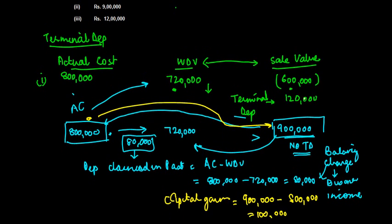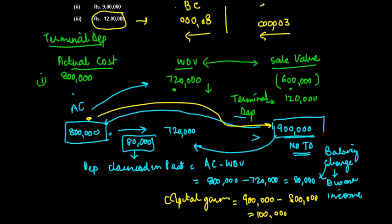Similarly, in the third case, when it is sold for 12 lakh, just find this out for yourself. I am writing the answers in reverse order—for balancing charge and capital gain, see if these answers tie for you. Just write it in the reverse order and you will get the answers. This is the balancing charge, this is the capital gain.